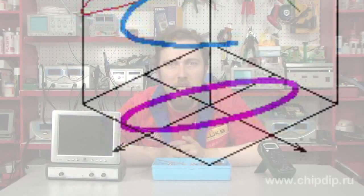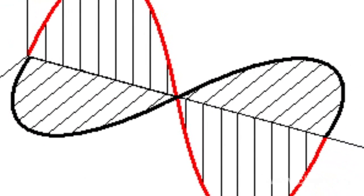Circular polarization may be right or left, depending on the rotation direction of the inductance vector. Elliptic polarization is the intermediate case between linear and circular polarization. Non-coherent radiation may be non-polarized, semi-polarized, or polarized.